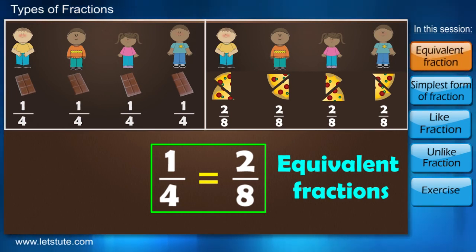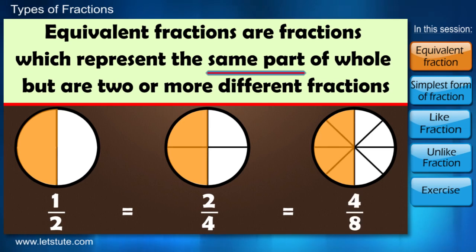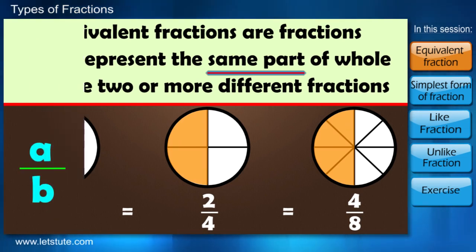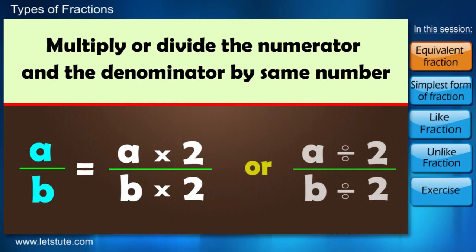Equivalent fractions are fractions which represent the same part of whole but are two or more different fractions. Equivalent fractions are very simple to form. You just have to multiply or divide the numerator and the denominator by the same number.